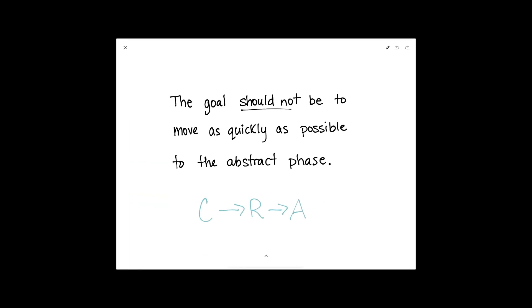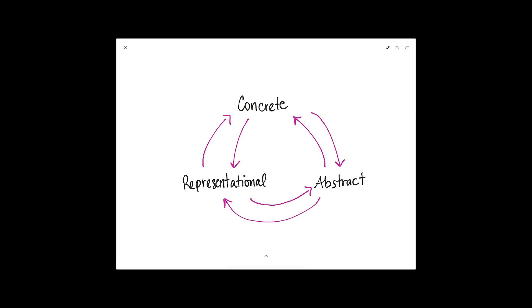I encourage you to think deeply about taking the focus off of the abstract phase. The goal should not be to move as quickly as possible to abstract. The goal should be to make as many connections as possible between all three phases. Let's take a look at an alternative way of looking at the CRA model — this is really just a mindset shift, a simple mindset shift. What if instead of viewing it as a sequence of steps, we view it as a web?